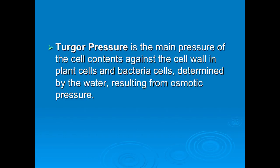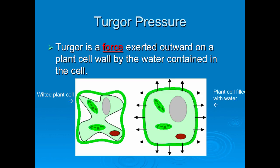It is that internal pressure that pushes against the cell wall — from the inside, pushing out. Turgor is a force that is exerted outward on a plant cell wall by the water contained inside the cell.